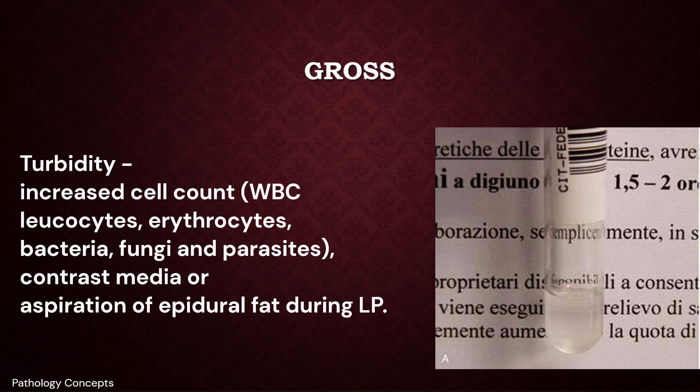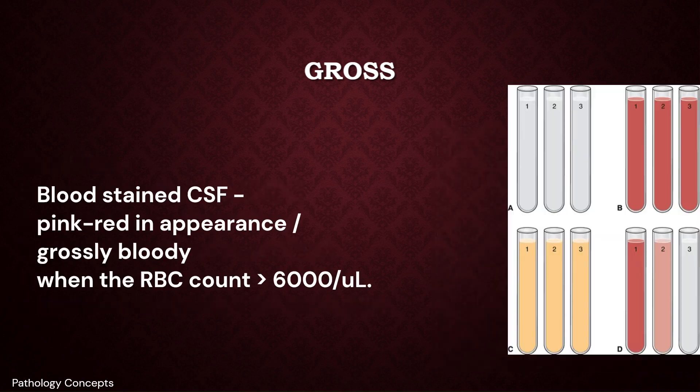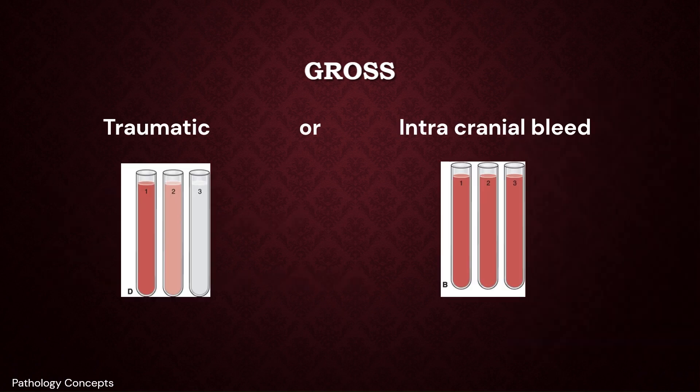Turbidity may also be caused by contrast media or aspiration of epidural fat during lumbar puncture. Blood-stained CSF appears pink to red and may be grossly bloody when RBC count is more than 6,000 per microliter. When blood is present in a CSF specimen, it is necessary to determine whether it is due to traumatic lumbar puncture or true intracranial bleed.